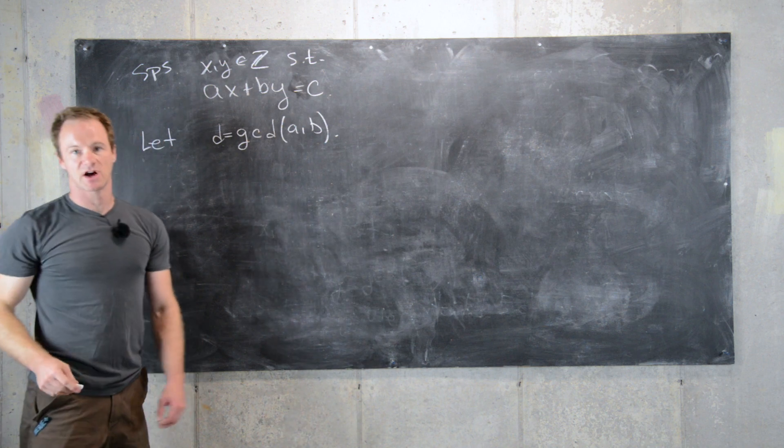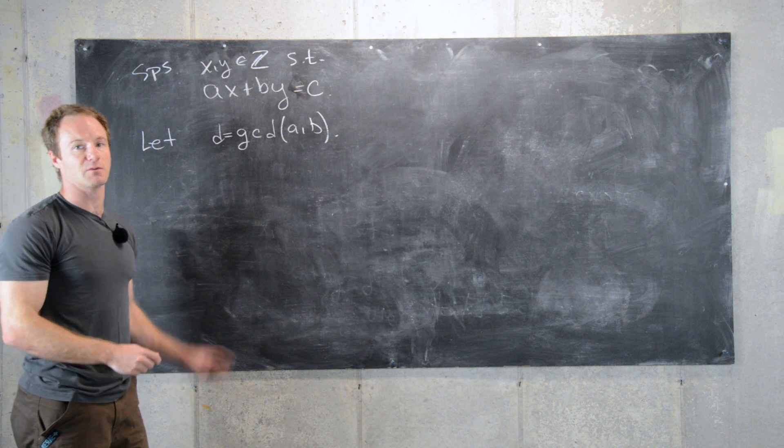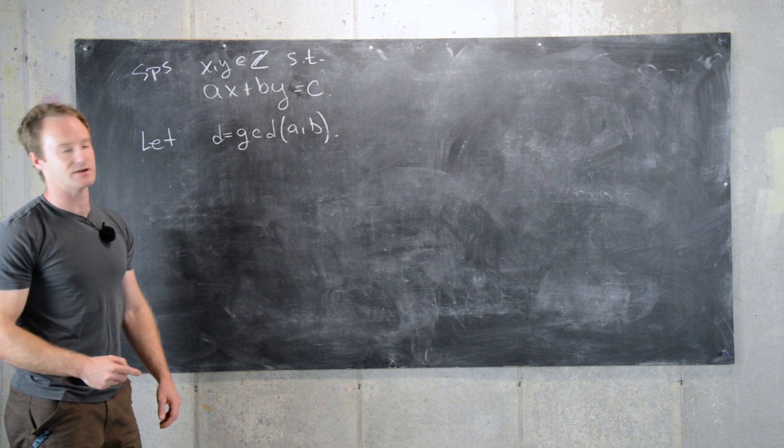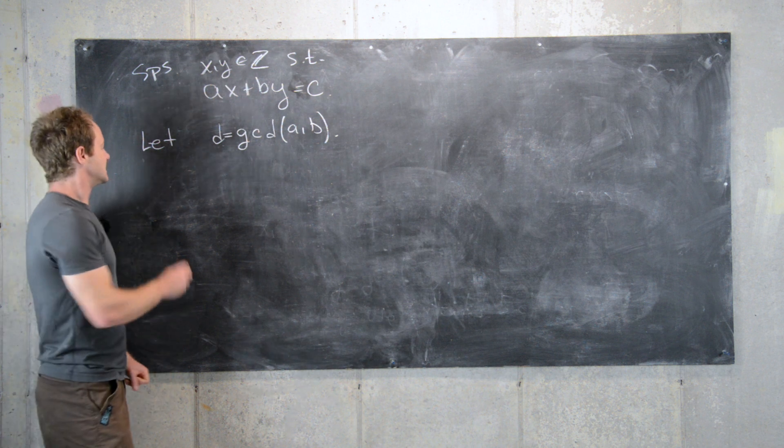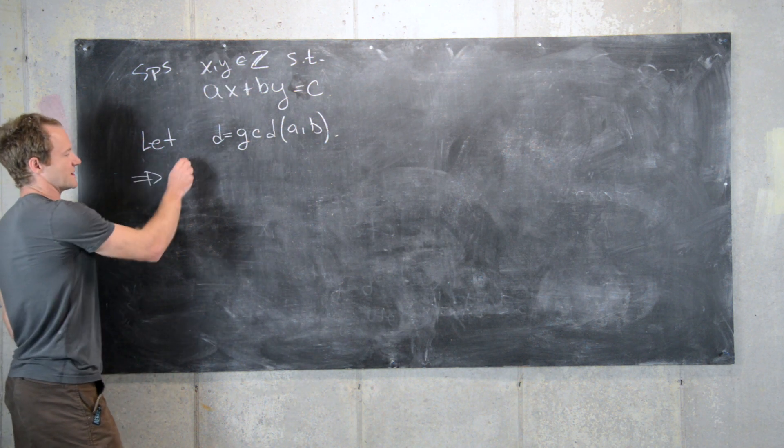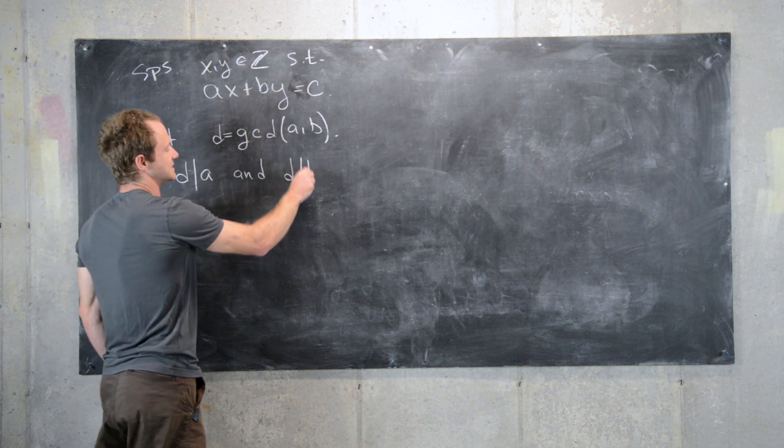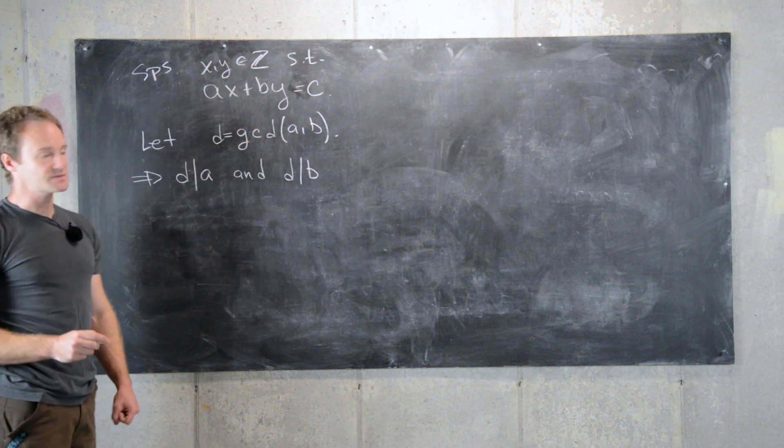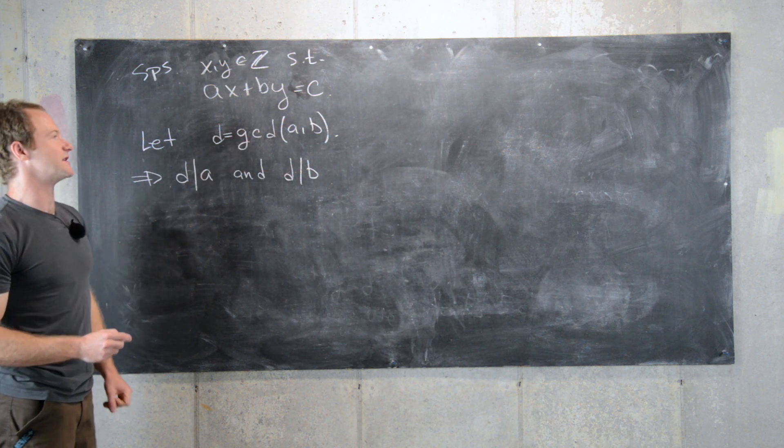As we talked about before, we do have a solution if c is equal to d, but we want to consider a more general case here, maybe c is not equal to d. So we'll let d be the gcd of a and b. Notice that tells us that d divides a and d divides b. It's the greatest common divisor but it's also a common divisor.